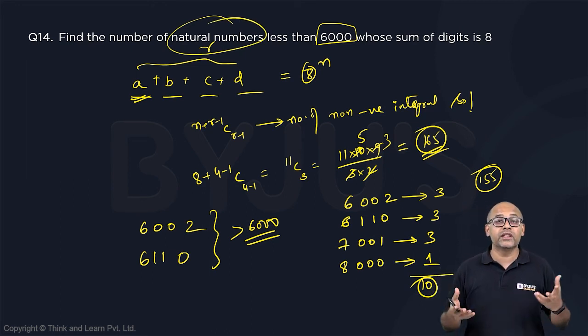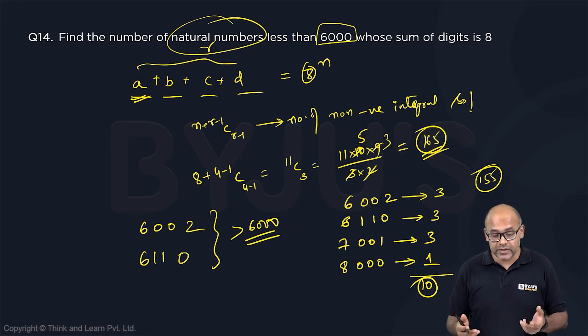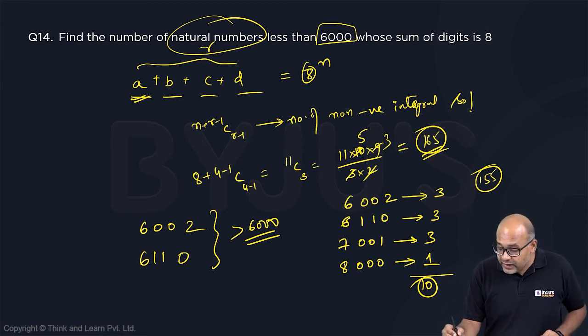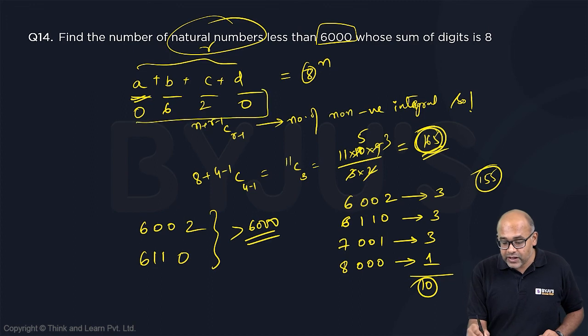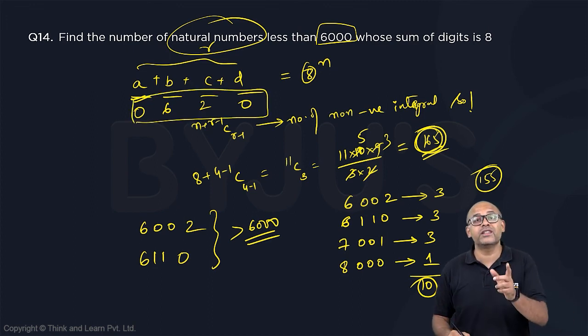Where are the 2 digit numbers? Where are the 1 digit numbers? Where are the 3 digit numbers? Now the beauty of the problem is these 165 takes cases like 0620. This is actually a 2 digit number. 0620 is 62. That is already counted in your 165.